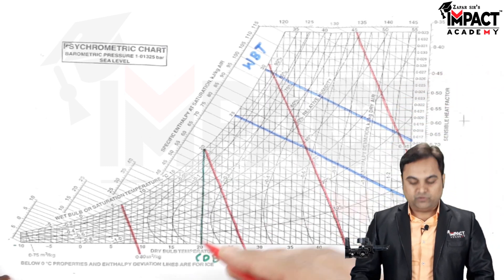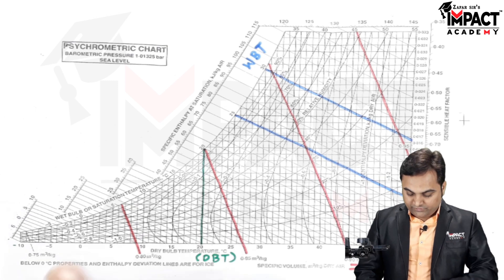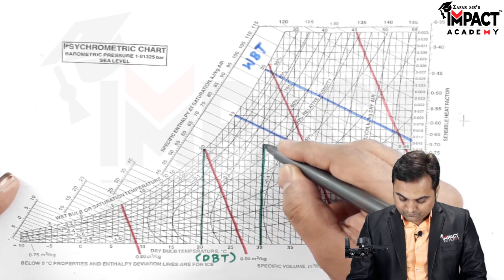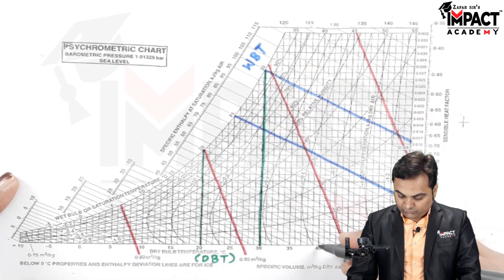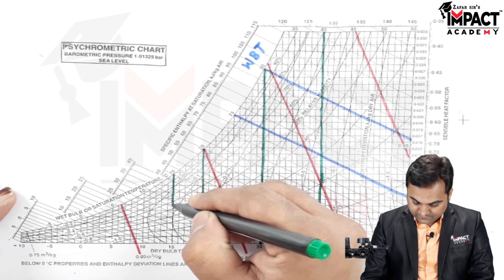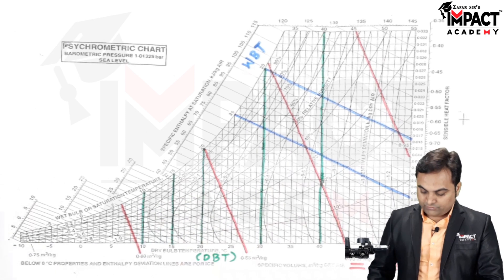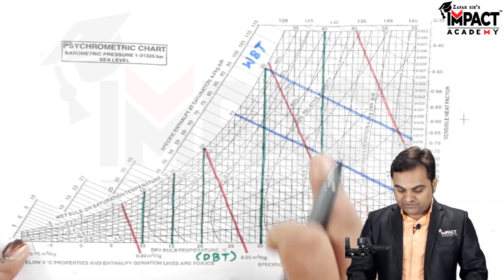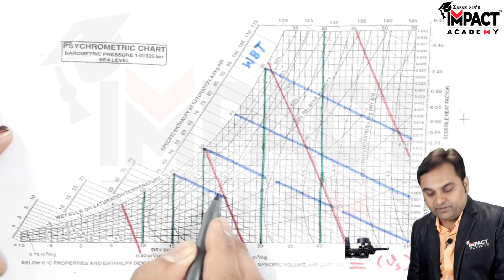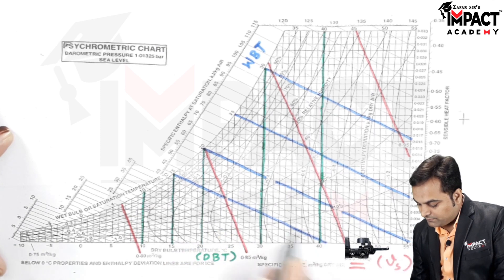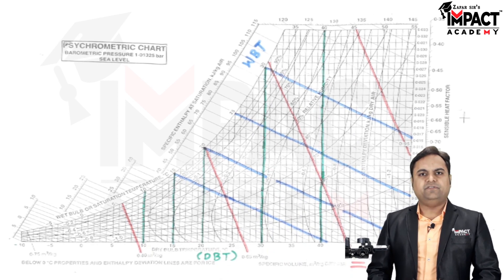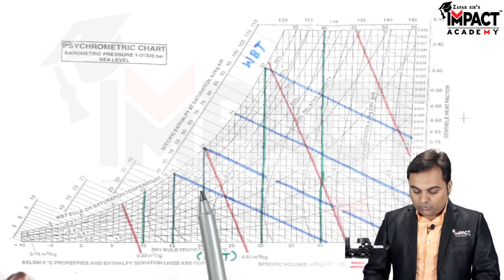The lines drawn in red indicate specific volume. The lines drawn in green indicate dry bulb temperature — for example, at 30, 40, 15, and 10 degrees Celsius. The blue lines indicate wet bulb temperature, such as 15 degrees Celsius. When solving problems, a particular point is found by the intersection of at least two known properties, such as dry bulb temperature and wet bulb temperature.